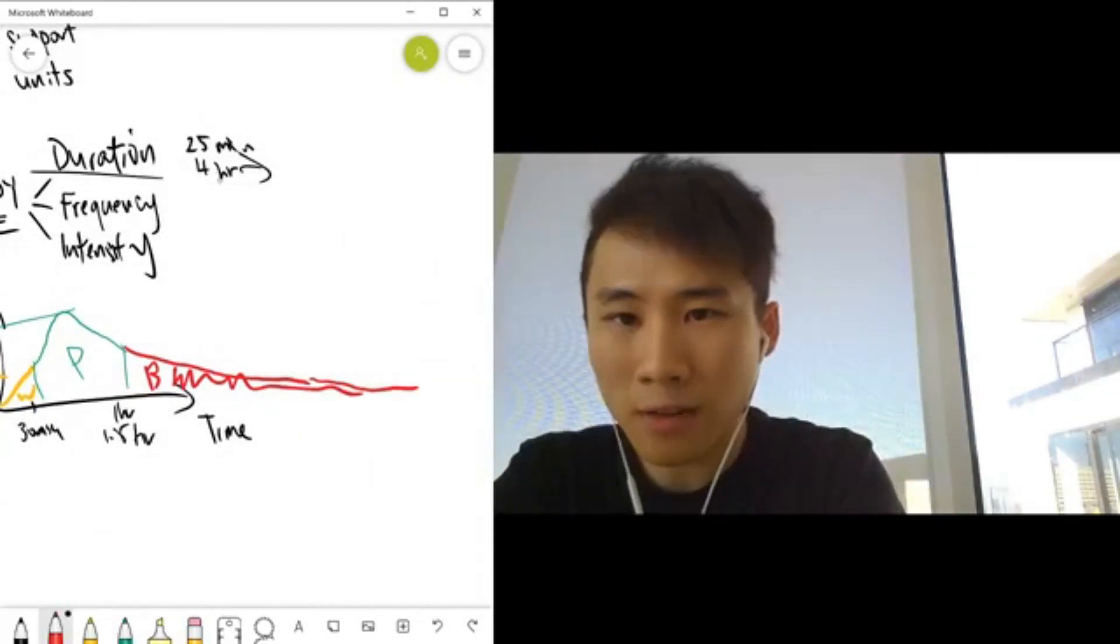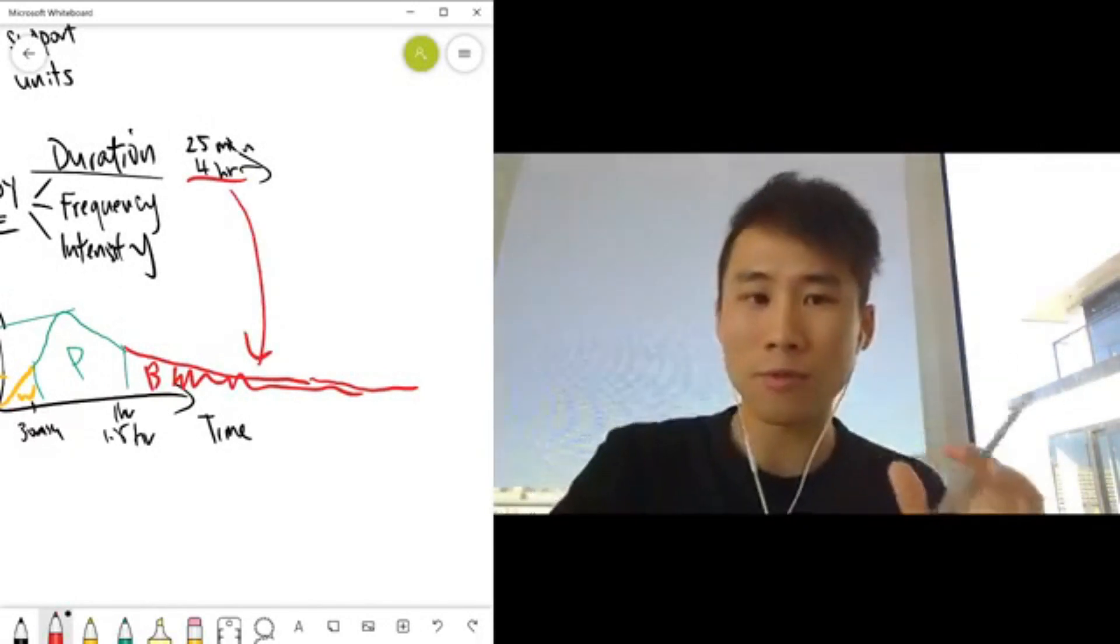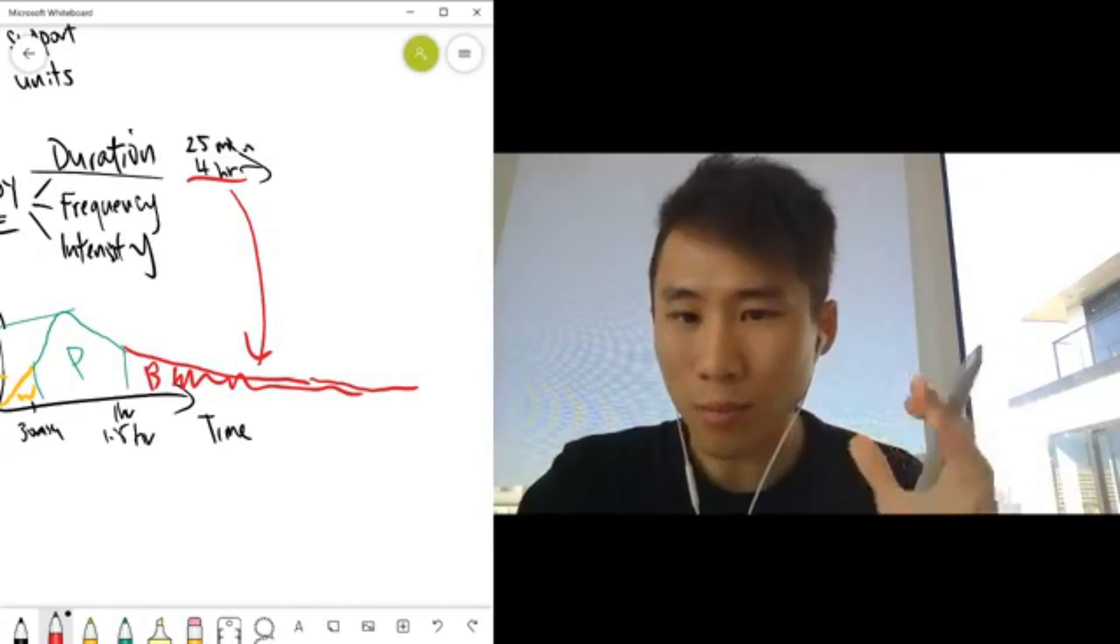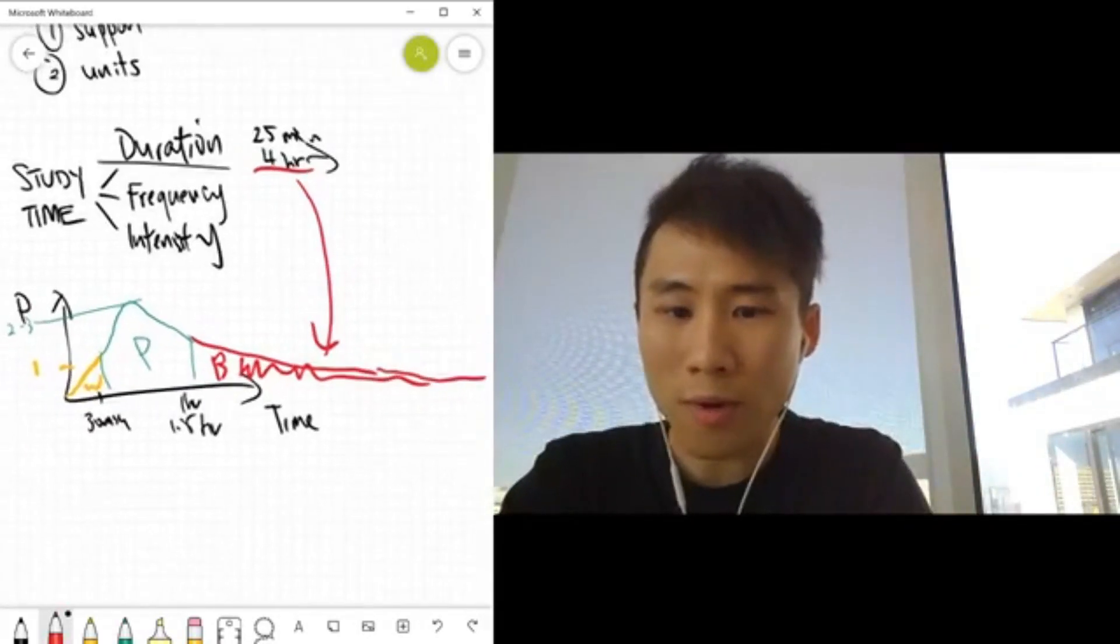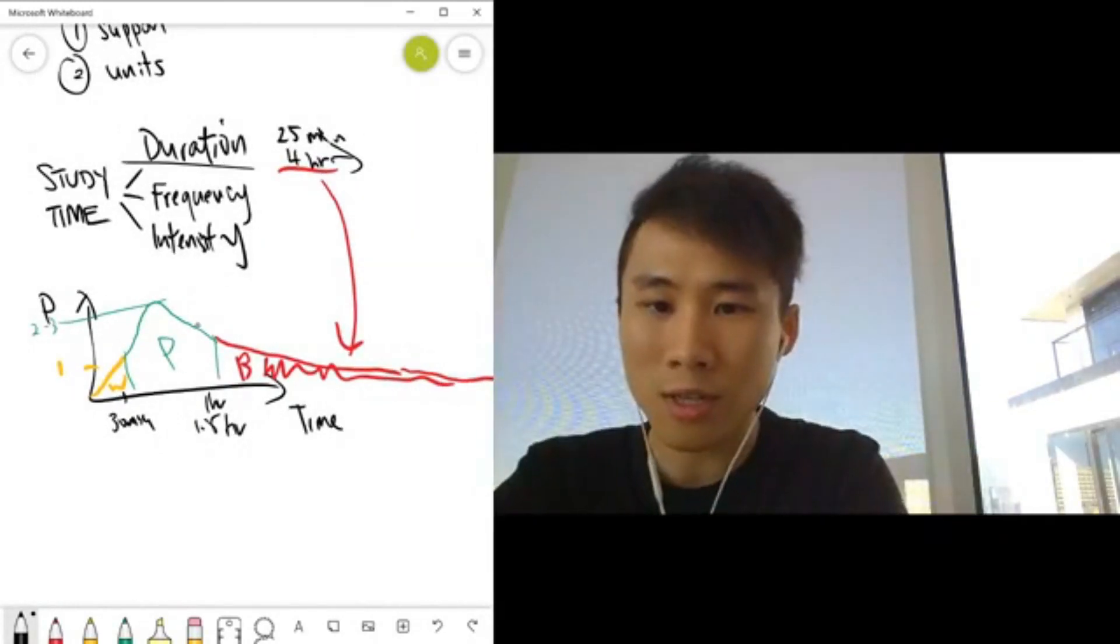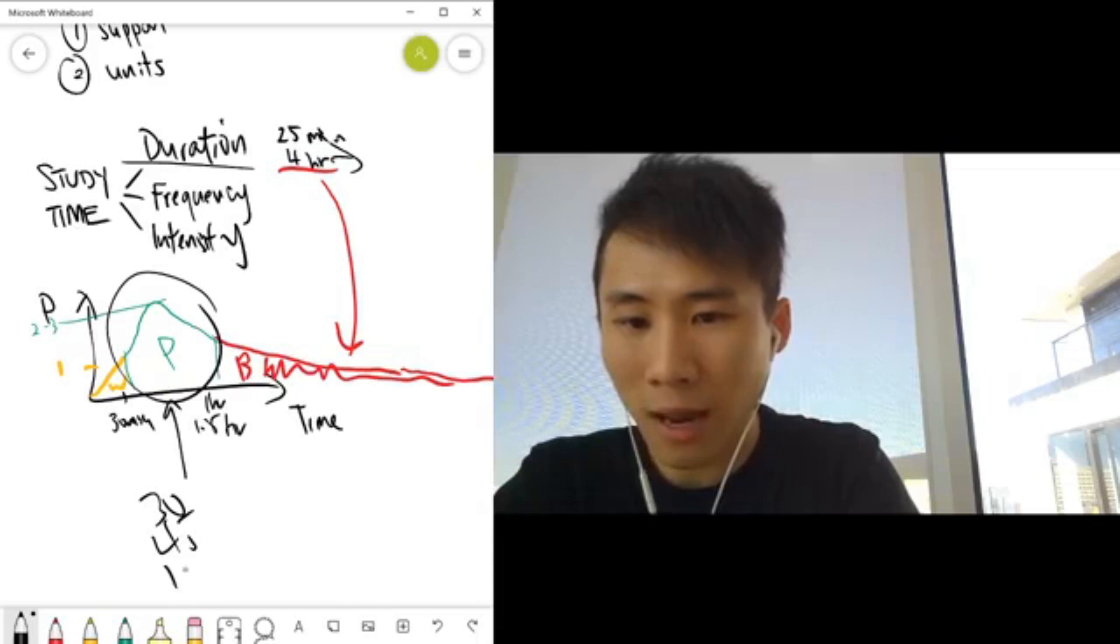When they spend something like four hours during their typical study block, what happens is they stay in this burnout zone for a long time - the brain goes foggy, they're hungry, they need a break. What I recommend is actually trialing, because everyone focuses in this productivity zone differently. Some people might be here at 30 minutes, some might be 45 minutes, some might be an hour.